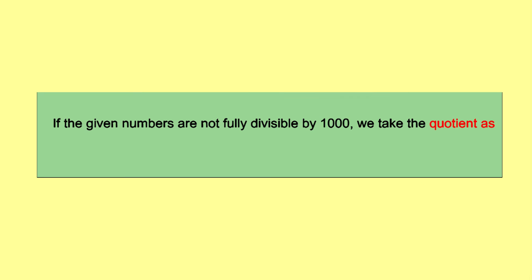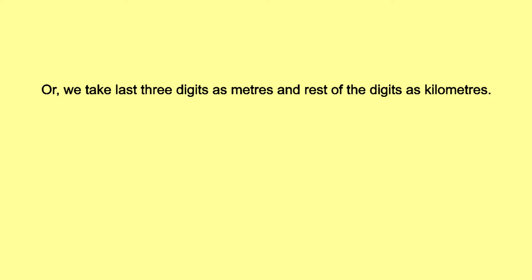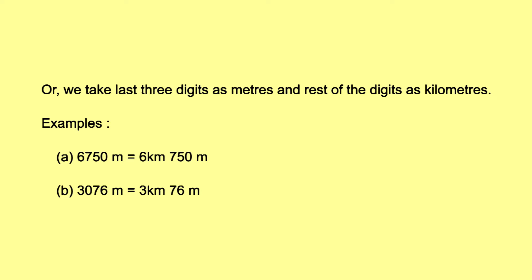If the given numbers are not fully divisible by 1,000, we take the quotient as kilometers and the remainder as meters. Alternatively, we take the last three digits as meters and the rest of the digits as kilometers. Example: 6,750 meters is equal to 6 kilometers and 750 meters. 3,076 meters is equal to 3 kilometers and 76 meters.